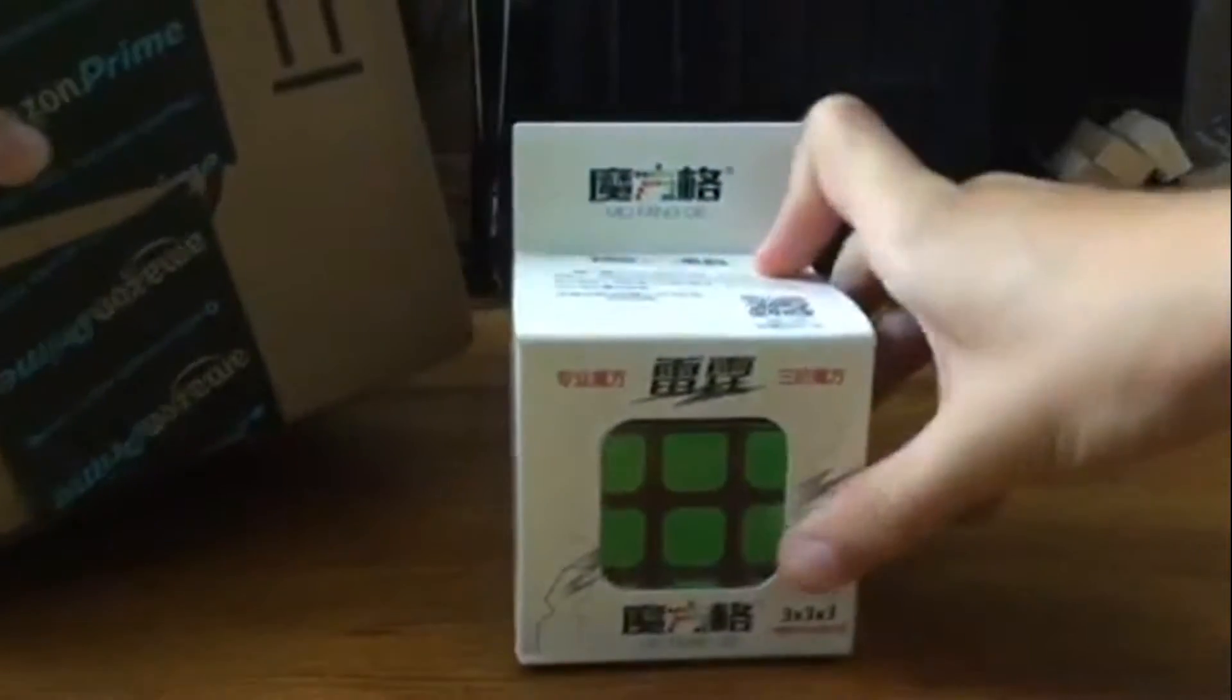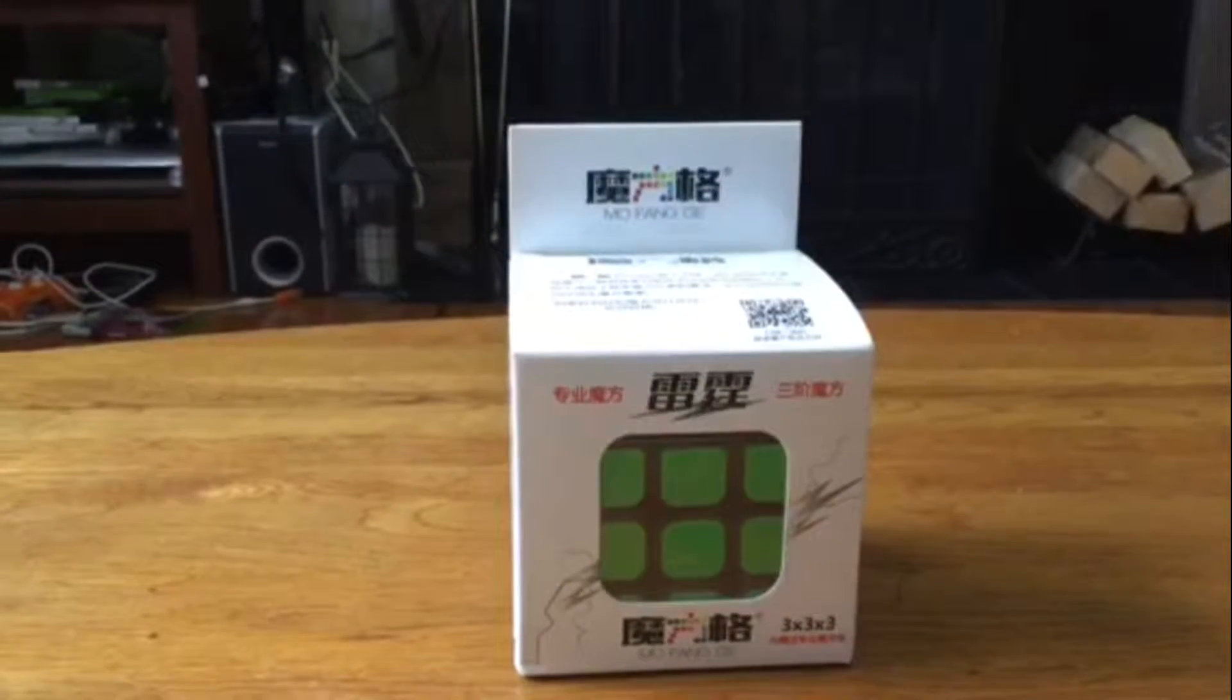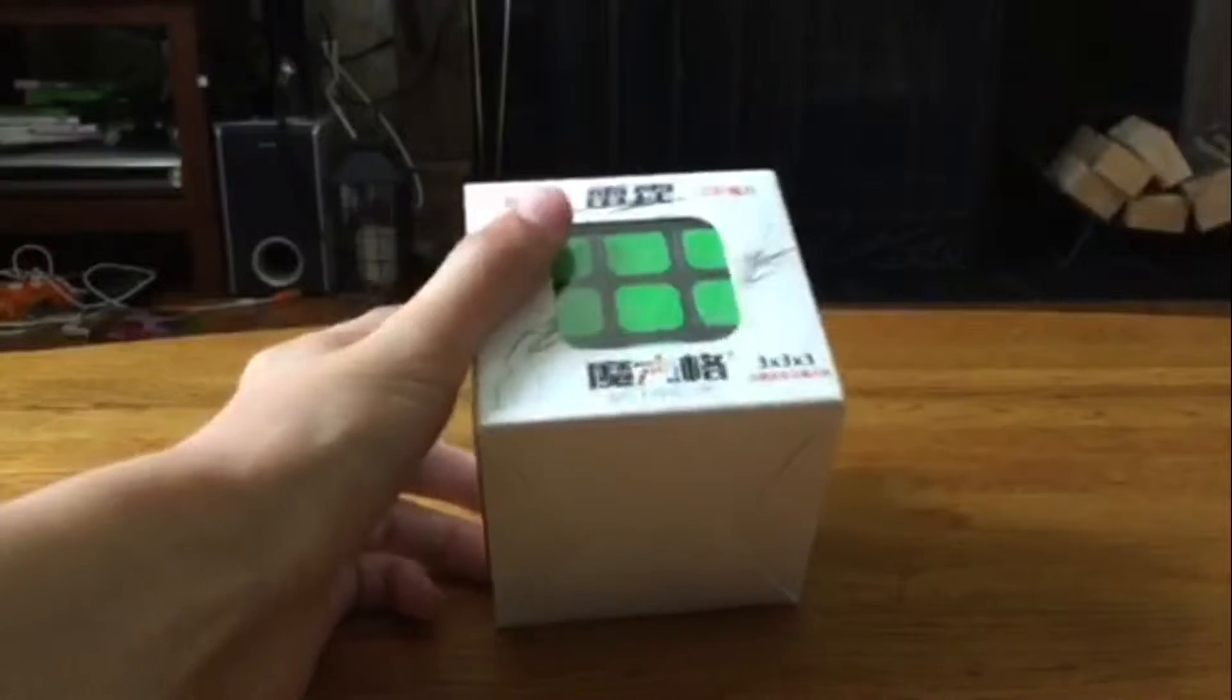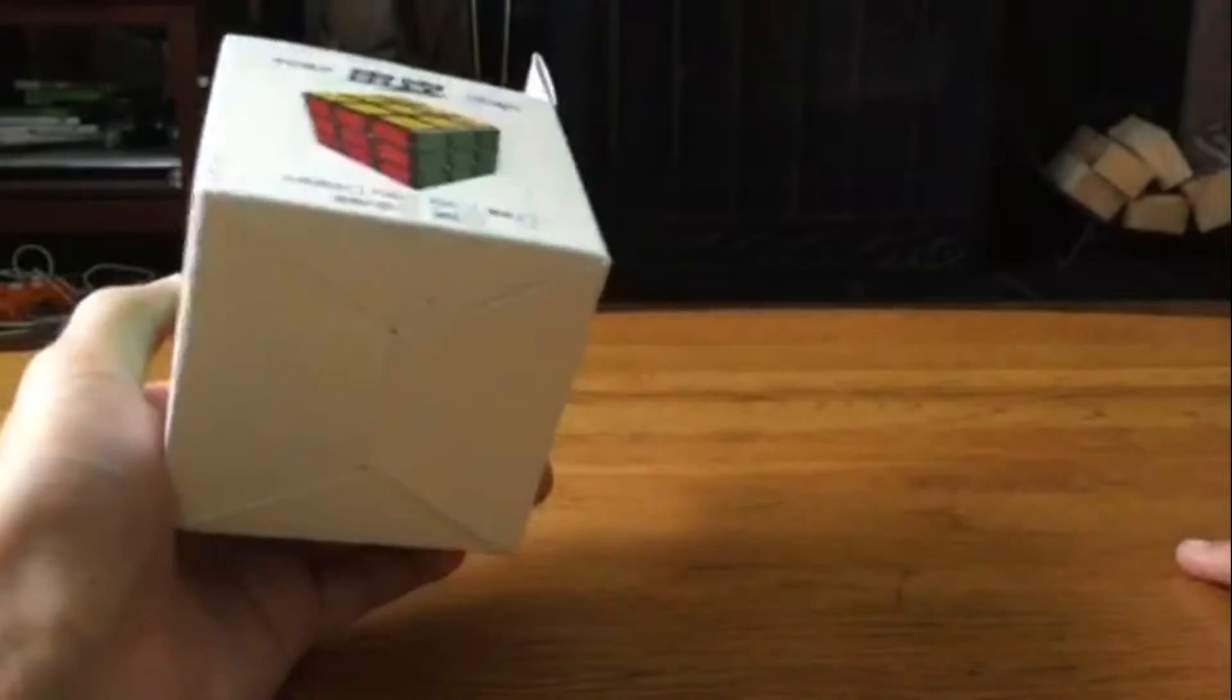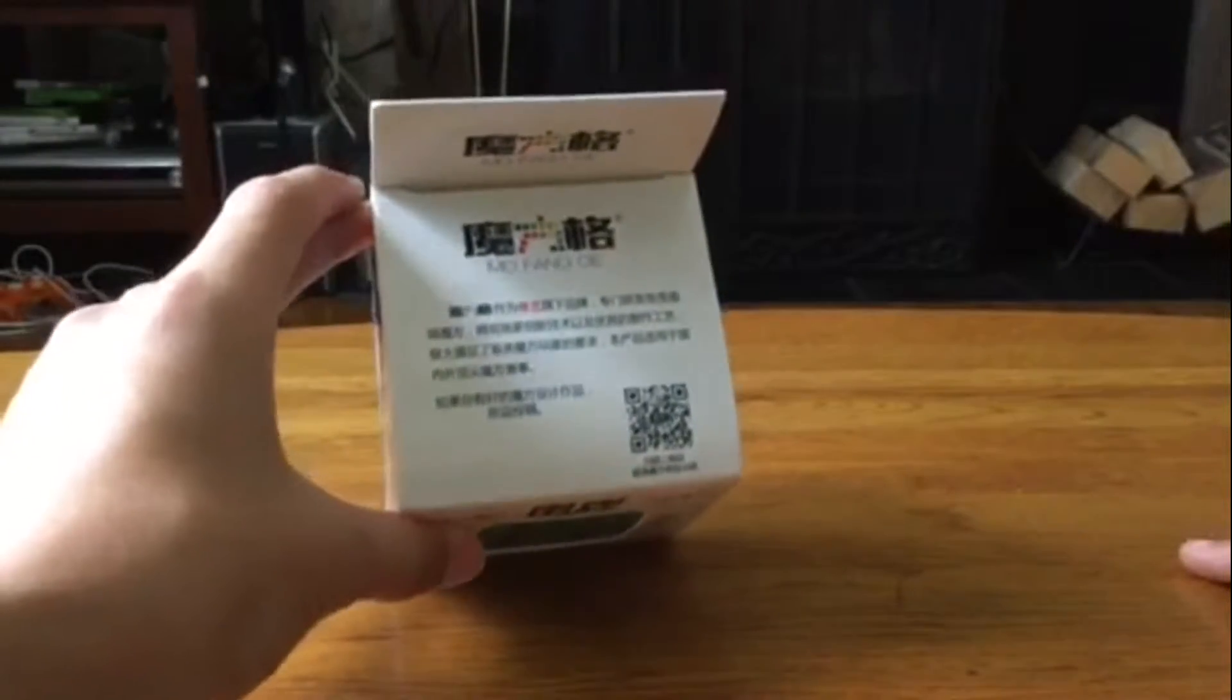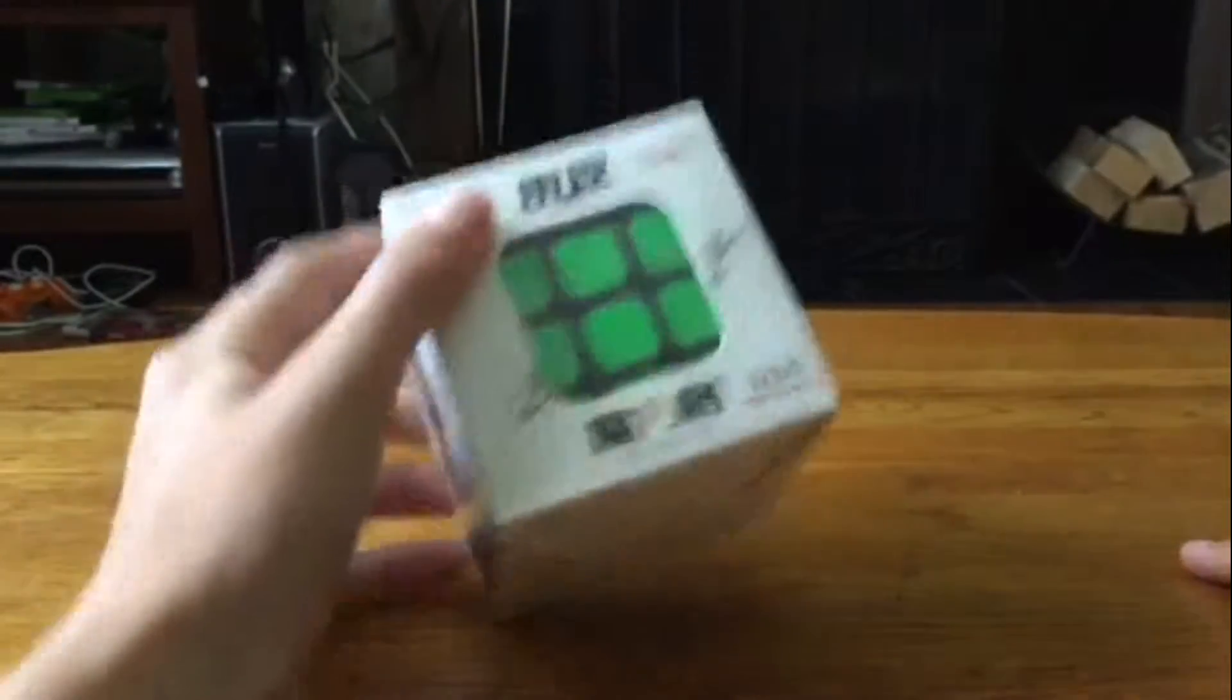Here it is, Qi Thunderclap Black Edition. See, it says 3x3x3. This is one giant box, guys. Qi Thunderclap, Mofengji, here's the box, here's a bunch of Chinese.